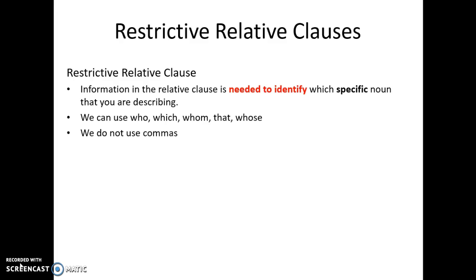So let's take a look at restrictive relative clauses first. Restrictive relative clauses provide information in the relative clause that's needed to identify which specific noun you're describing. We can use the relative pronouns who, which, whom, that, and whose — so we can use all of them. And for restrictive relative clauses, we do not use commas.